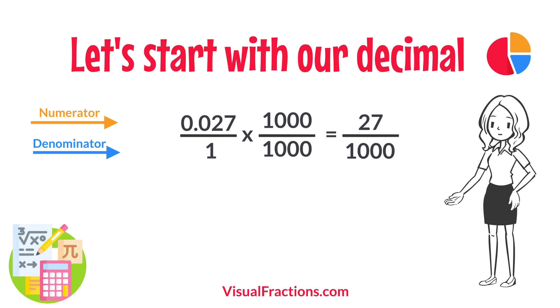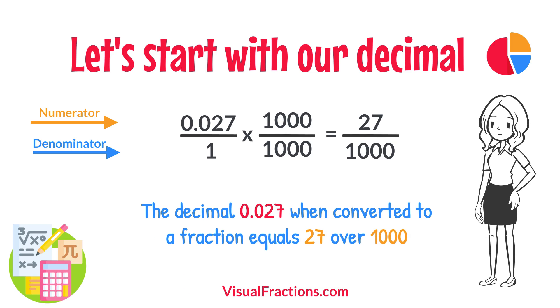And there you have it. The decimal 0.027 when converted to a fraction equals 27 over 1,000. This fraction is in its simplest form and cannot be further simplified.